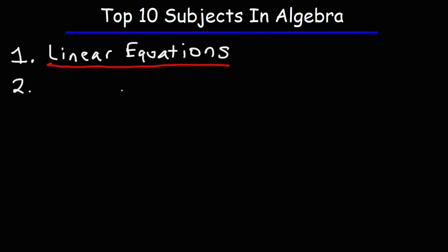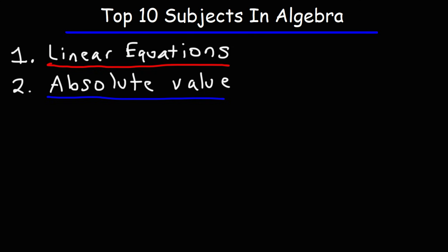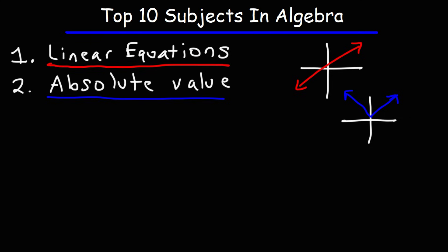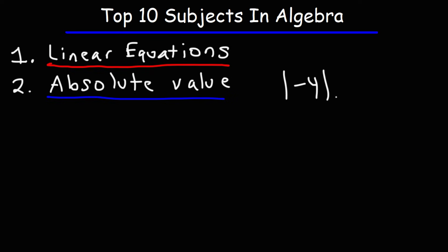The next topic has to do with absolute value. You need to know how to solve and graph absolute value equations. Linear equations are basically a straight line — they can go up or down. Absolute value graphs tend to have a V shape; they open upward if positive, downward if negative. The absolute value of any negative number is always a positive number.